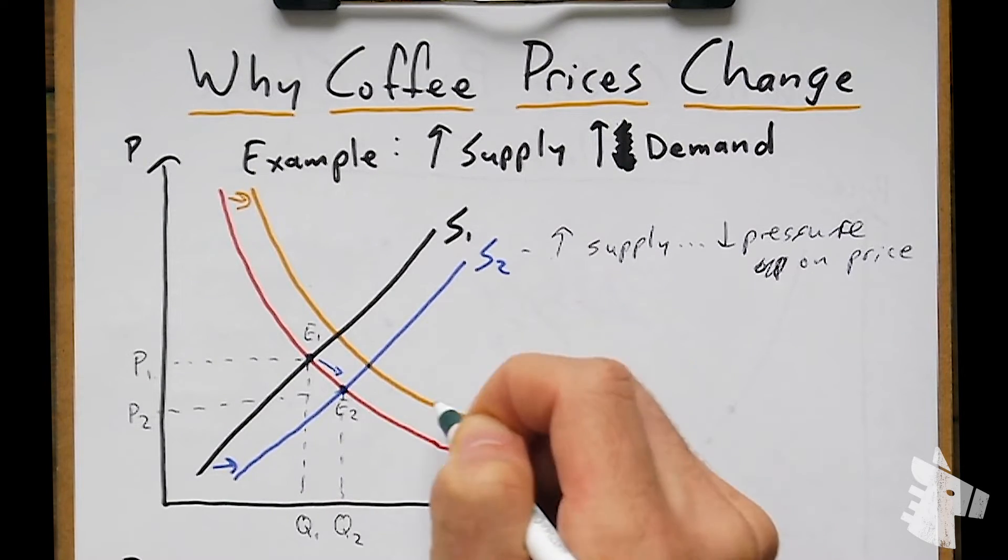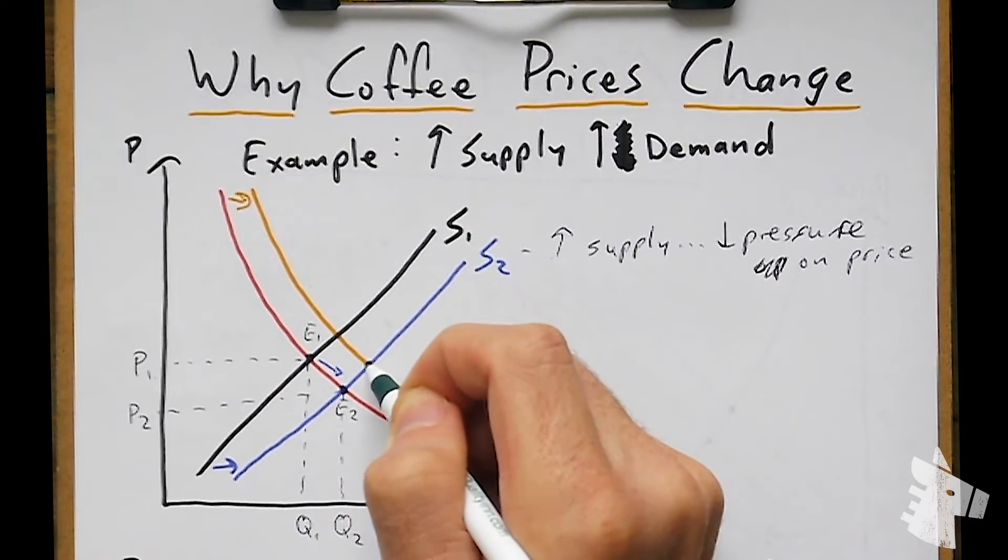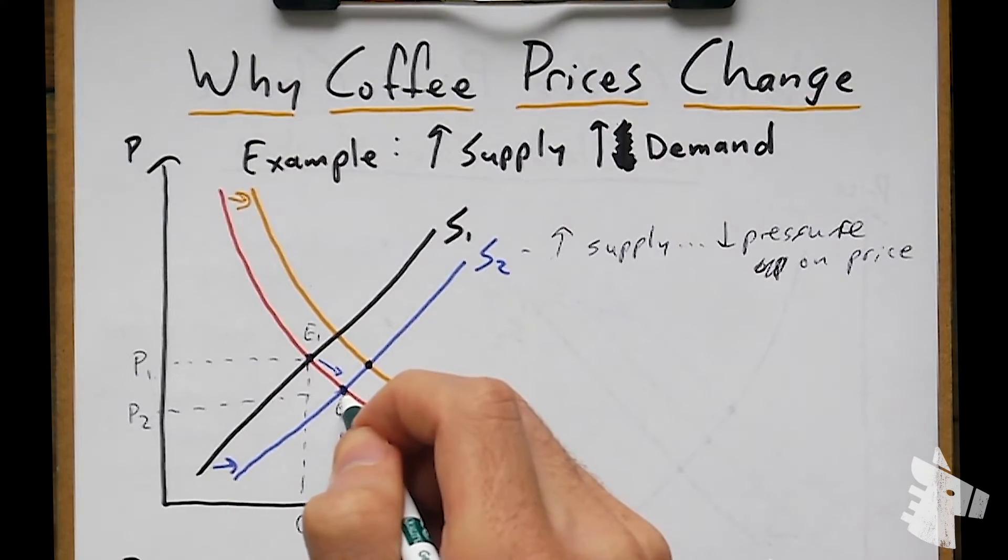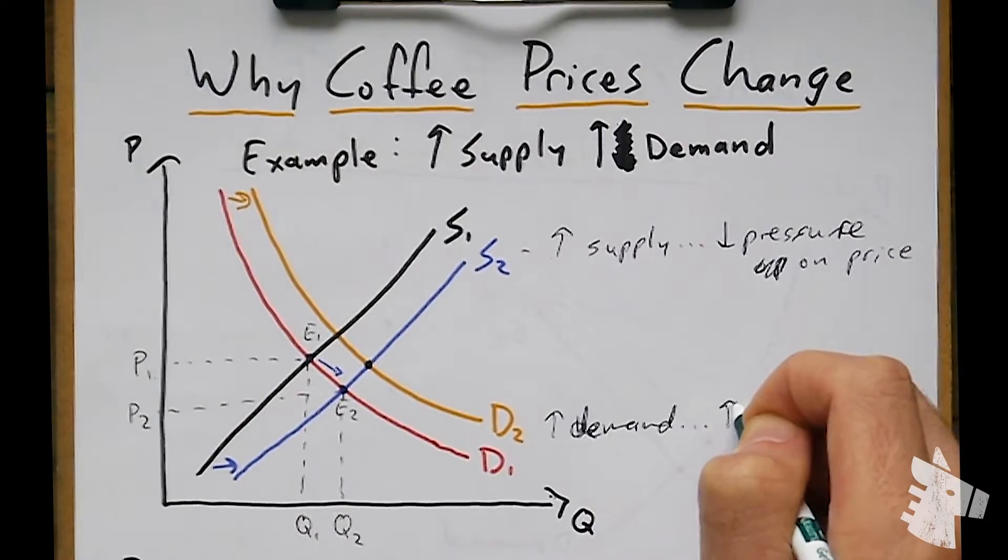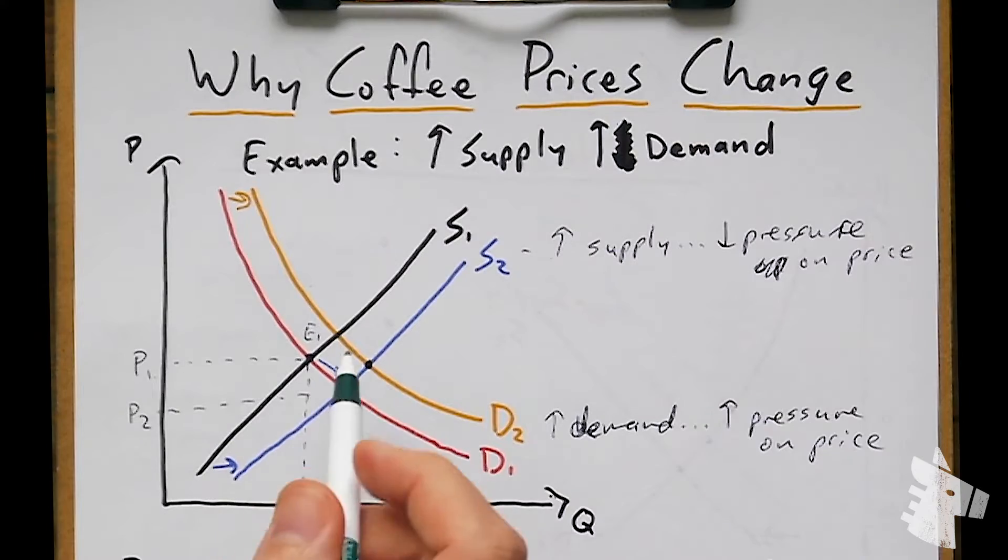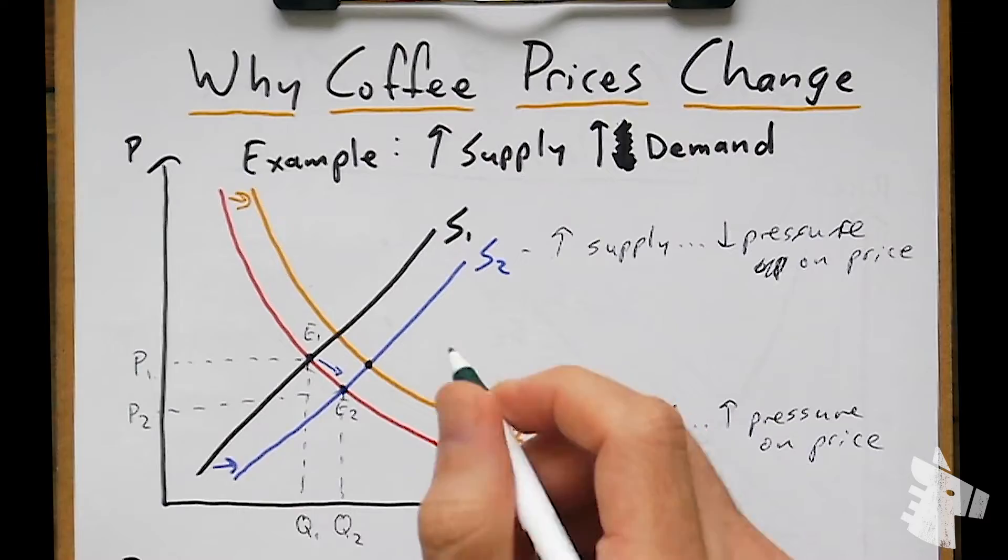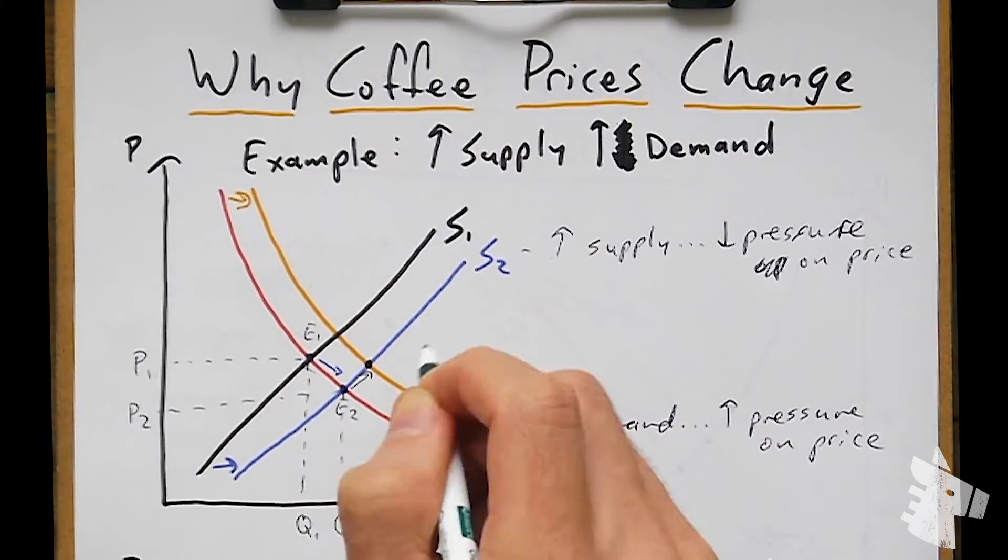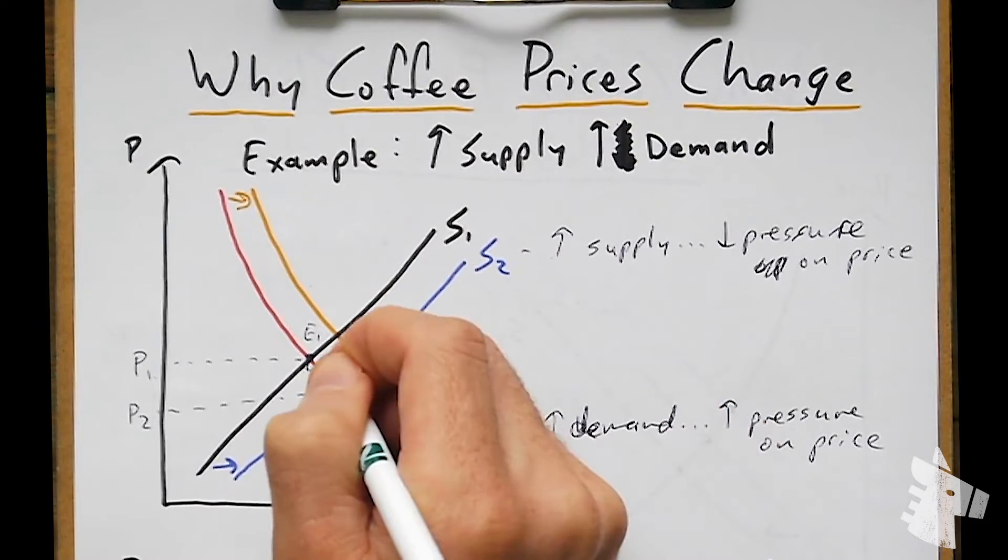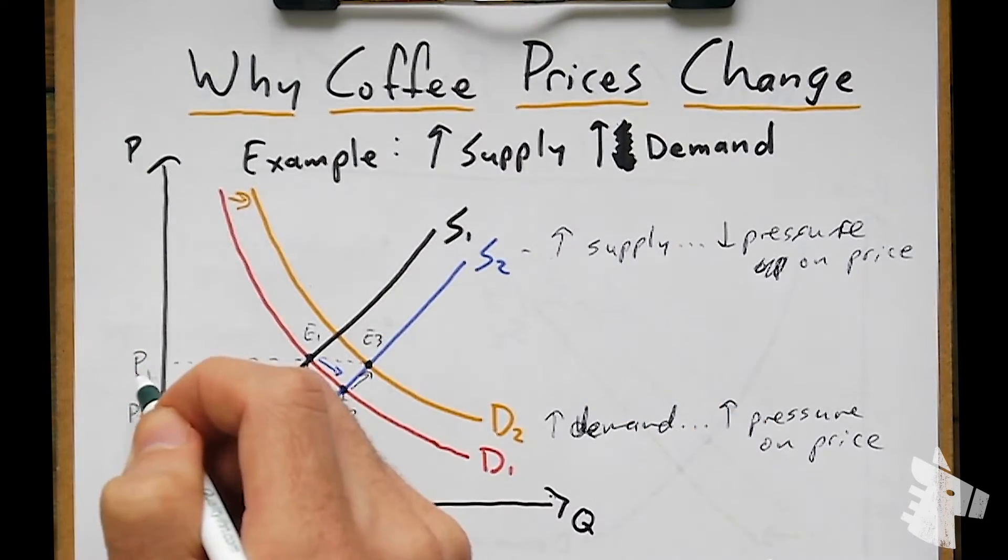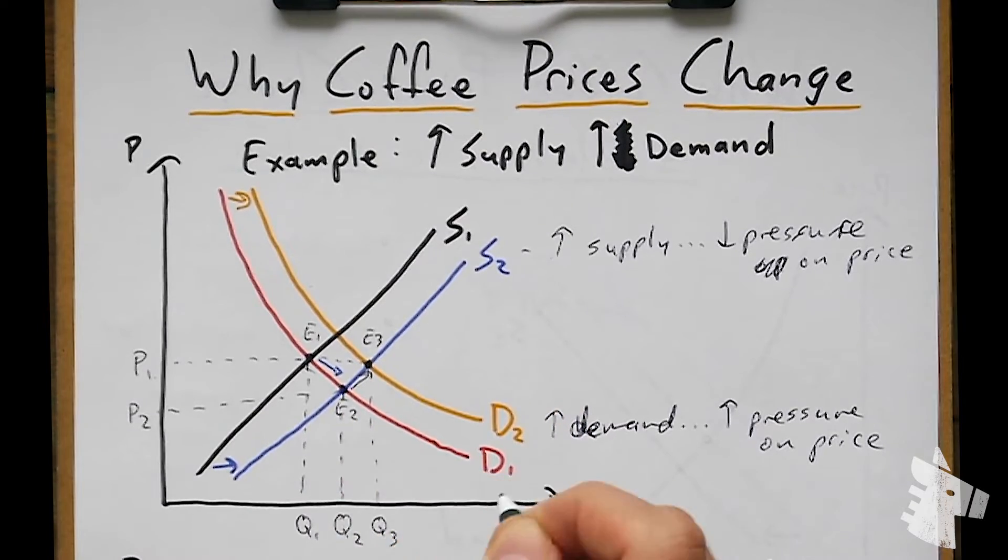And we can see that D2, demand two, intersects with supply two at this point here. So compared with E2, the outward shift in demand applied upward pressure on price. So an increase in supply initially caused a reduction in price. Our second change, which is an increase in demand, caused an upward shift in price. So here at E3, our price is back up to P1, and our quantity rose further to Q3 here.